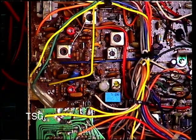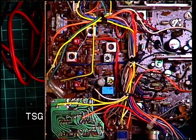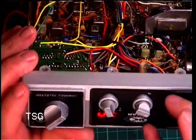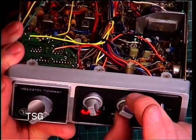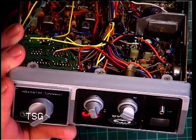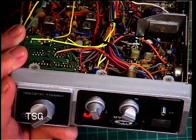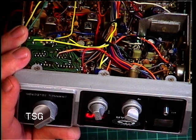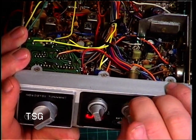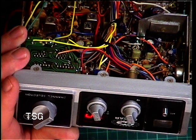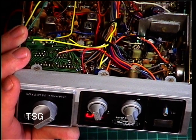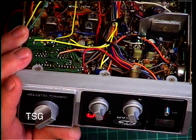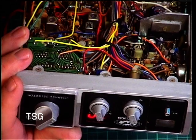Now we need to do the squelch. So turn the signal generator off and put squelch to threshold. Turn the generator on. See when it comes in. Comes in at one microvolt that's fine. Turn the squelch to full and see when it comes in now. Comes in at S9 that's absolutely ideal works just how you want it to.